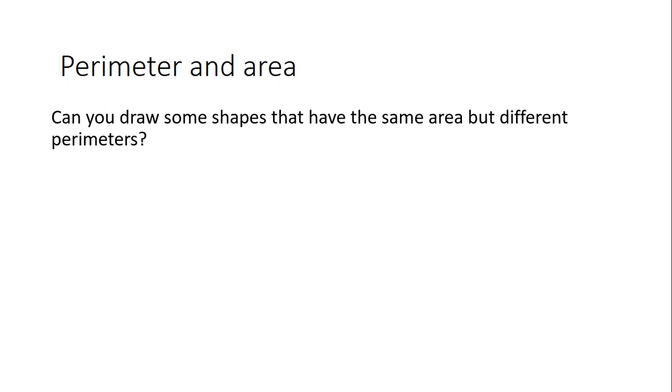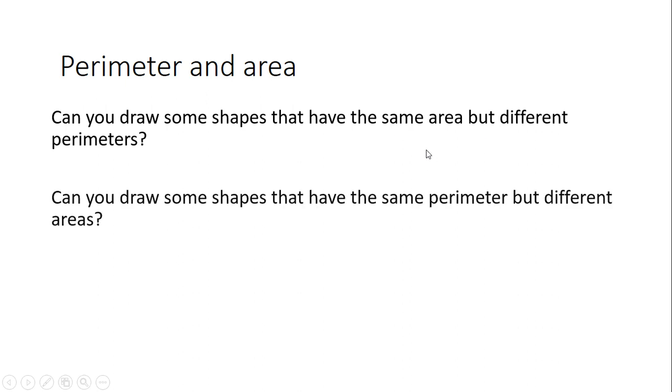I've got a series of questions, and I want you to pause the video when necessary and work through these step by step. They're going to get progressively trickier. First of all, can you draw some shapes that have the same area but different perimeters? You want to keep the area the same and manipulate it so the perimeters change. Can you draw some shapes that have the same perimeter but different areas? I'm not sure if that's easier or harder, but have a go at that. Pause the video again and have a go.